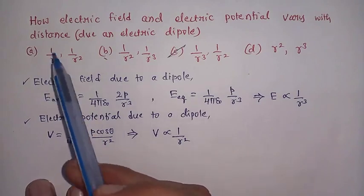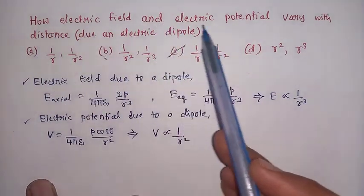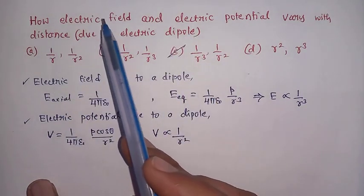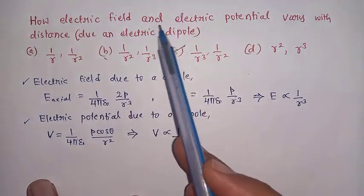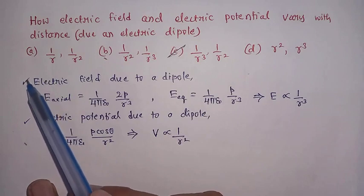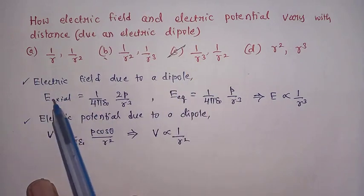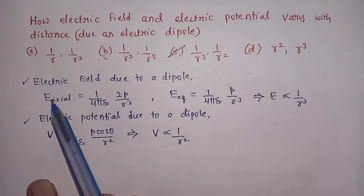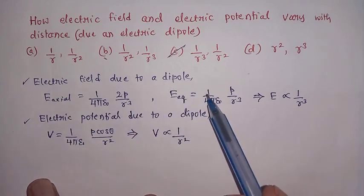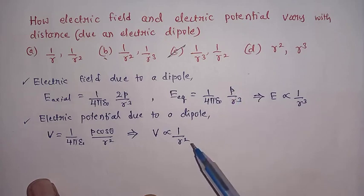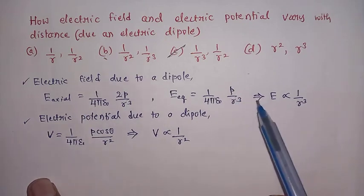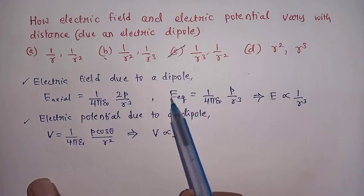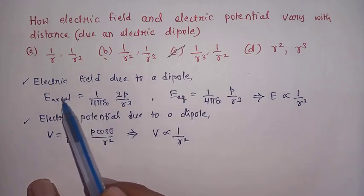One more important point: how do the electric field and electric potential due to an electric dipole vary with distance? For an electric dipole, the electric field on the axial line is given by 1 divided by 4 pi epsilon naught times 2p divided by r cubed. The electric field on the equatorial line is 1 divided by 4 pi epsilon naught times p divided by r cubed. So the electric field due to a dipole is inversely proportional to r cubed.